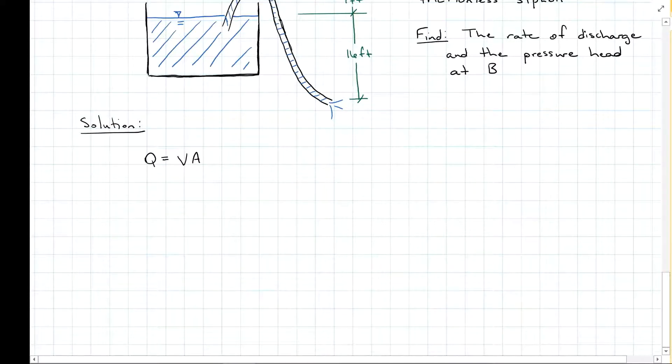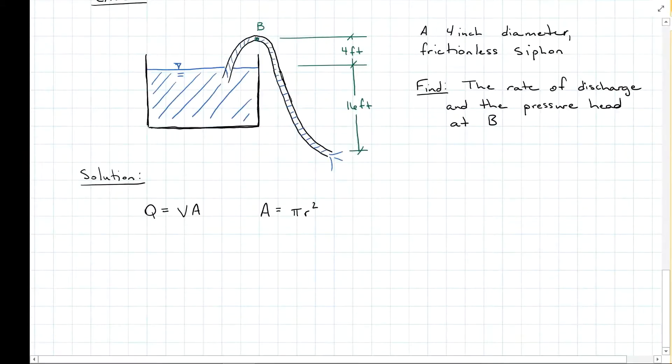So we will have our equation is equal to VA. Now I have A, A is going to be the cross-sectional area of the pipe, so that's going to be pi r squared for the pipe, but I do not have V exiting the pipe, so that's what I need to find.